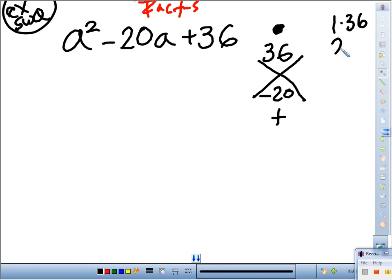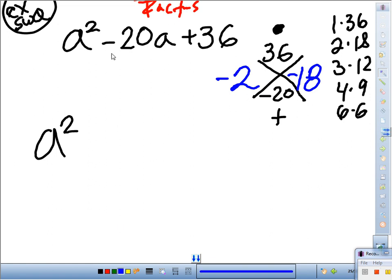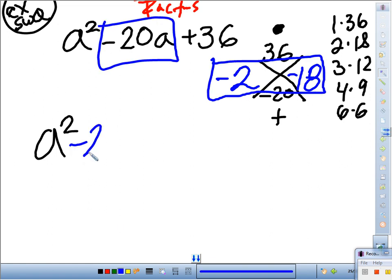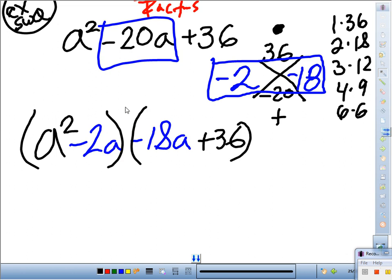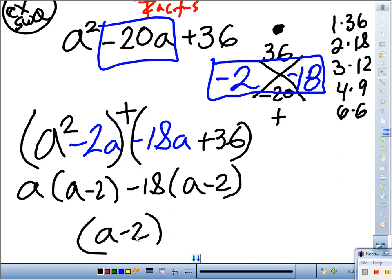I'm going to look for the pairs of factor of 36. 1 times 36, 2 times 18, 3 times 12, 4 times 9, and 6 times 6. Which one of those would add or subtract to give us negative 20? 2 and 18, but what do we know? Both of them have to be what? Negative. That is correct. So, therefore, a squared, this becomes these two. So, we write minus 2a minus 18a plus 36. Group, group, plus there. A is my GCF. A minus 2, the remainder. GCF here is negative 18. We're left with a minus 2. My factors are a minus 2 times a minus 18. These are my factors.